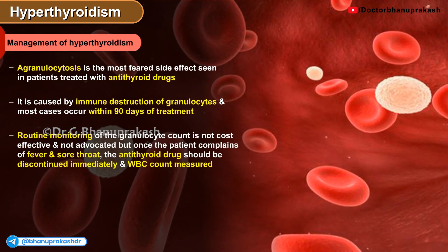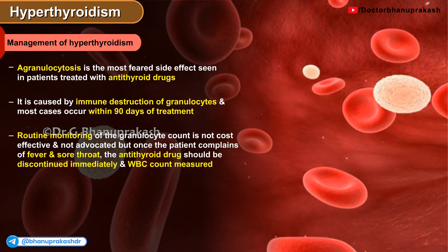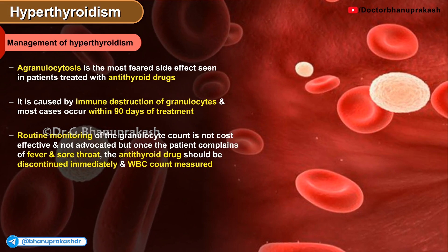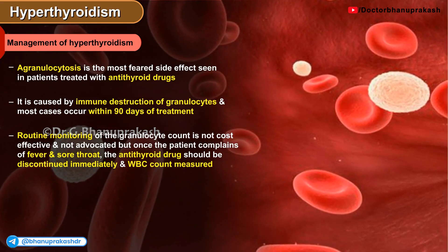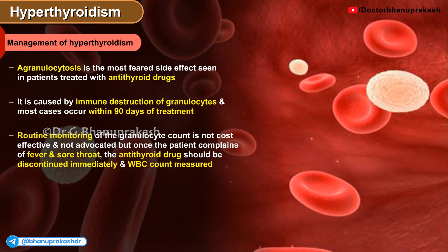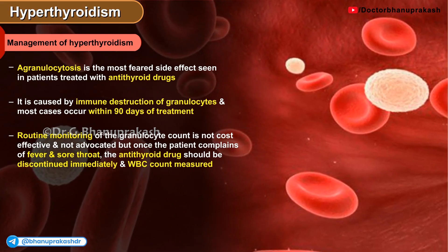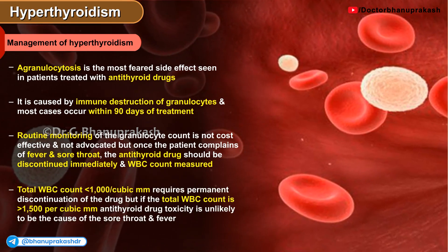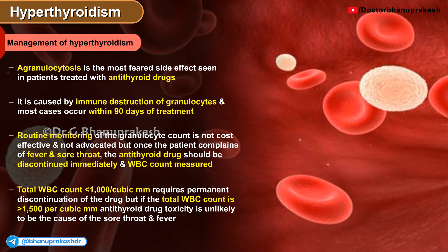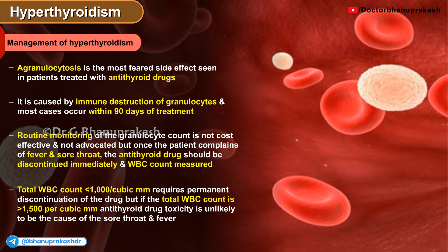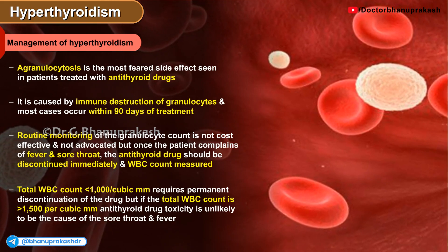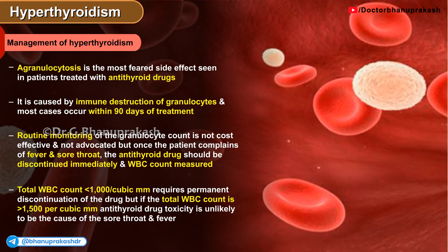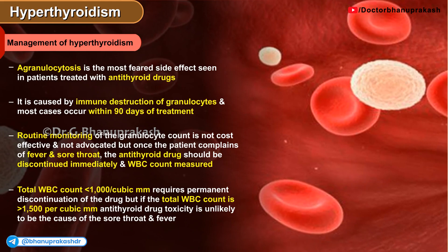Routine monitoring of granulocyte count is not cost-effective and is not advocated, but once the patient complains of fever and sore throat, the antithyroid drug should be discontinued immediately and a white blood cell count measured. If a total WBC count is less than 1,000 per millimeter cubed, it requires permanent discontinuation of the drug. If levels are more than 1,500 per millimeter cubed, antithyroid drug toxicity is unlikely to be the cause and other causes need to be evaluated.